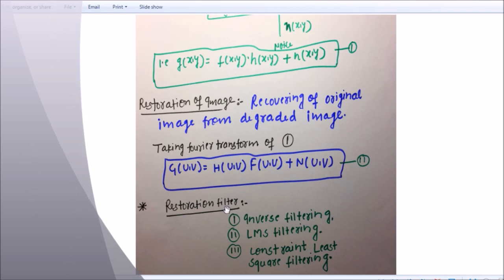We have many kinds of restoration filters. First: inverse filtering. Second: LMS filtering. And third: constrained least square filtering. LMS stands for least mean square filtering. This LMS filtering is also called Wiener filtering, which I will explain later. Here I am going to explain about inverse filtering.